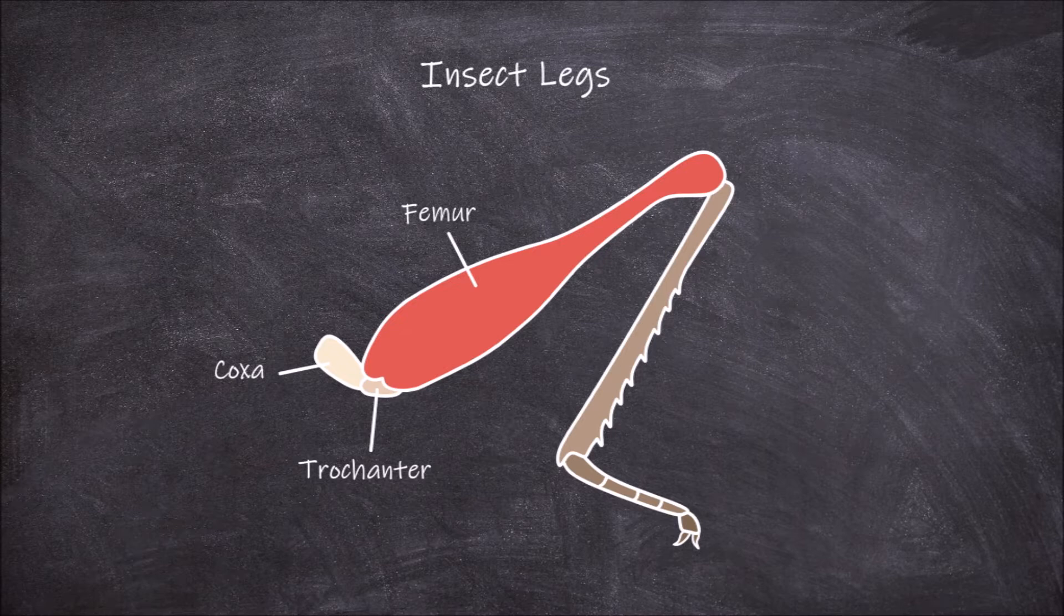It articulates with the trochanter proximally and the tibia distally. The tibia is the fourth segment. This segment often bears hairs and spines.